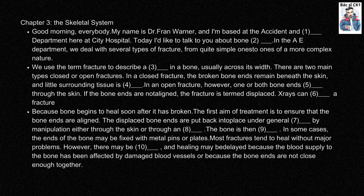There are two main types: closed or open fractures. In a closed fracture, the broken bone ends remain beneath the skin and little surrounding tissue is damaged. In an open fracture, however, one or both bone ends project through the skin. If the bone ends are not aligned, the fracture is termed displaced. X-rays can confirm a fracture.